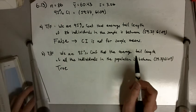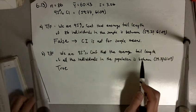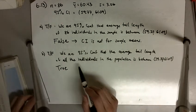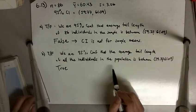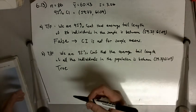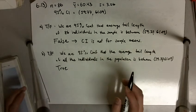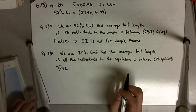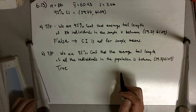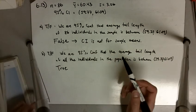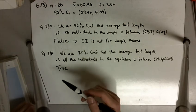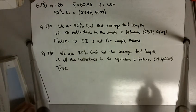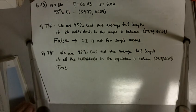The confidence interval is for the population average, so the average tail length of all the individuals in the population. If we could theoretically measure all of these mice and their tail lengths, that would be the population mean, and here we're saying we're 95% confident that that number is between 59.77 and 61.09.